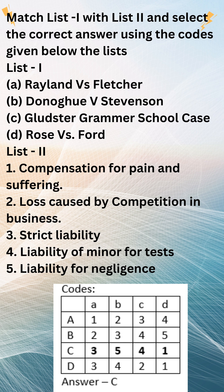The rule in Rylands v. Fletcher is based on the principle that people who engage in non-natural uses of land should be held responsible for any damage that results, even if they are not negligent. The rule has been applied in a wide range of cases, including cases involving the escape of fire, gas, and other hazardous substances. It has also been applied in cases involving the escape of animals and other objects.